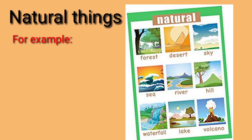To give you more examples of natural things: forest, desert, sky, sea, river, hills, waterfall, lake, volcano, stars — all these are natural things, all created by nature, all created by God. So all these are called natural things.